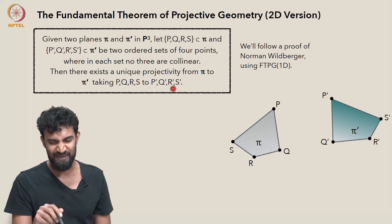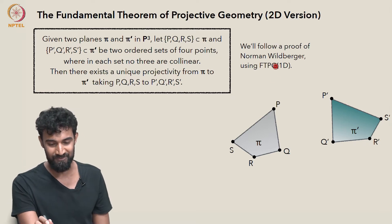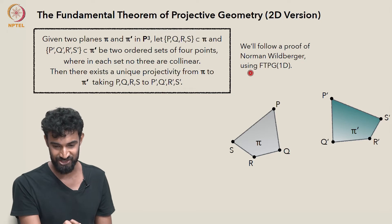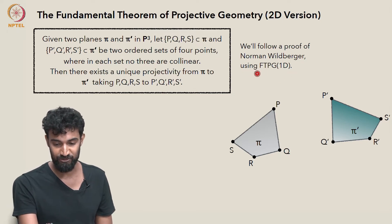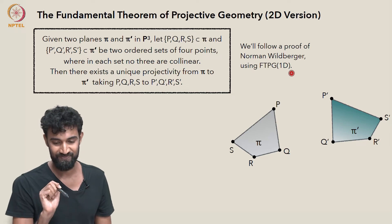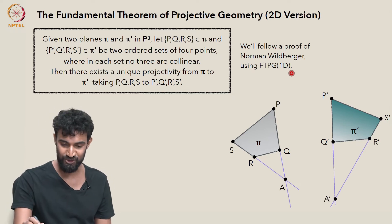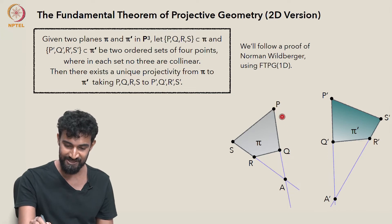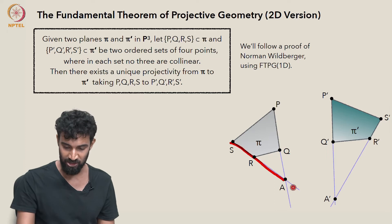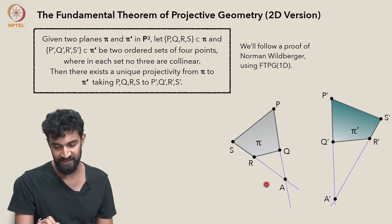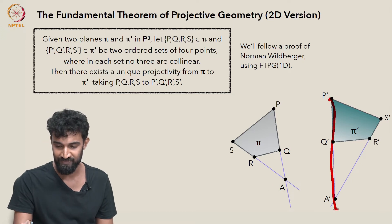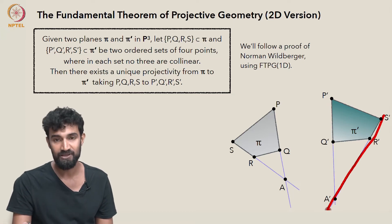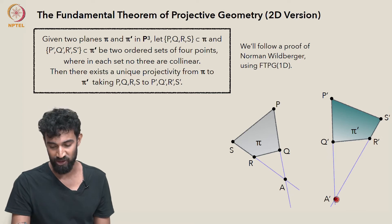To prove this, I'm going to follow a proof from Norman Wildberger's video lectures. It uses the fundamental theorem of projective geometry in 1D. The key to this proof is to first extend the line through PQ and the line through SR. Those are going to intersect at a point A. Similarly, let's extend P prime Q prime and S prime R prime. Those are going to intersect at a point A prime.